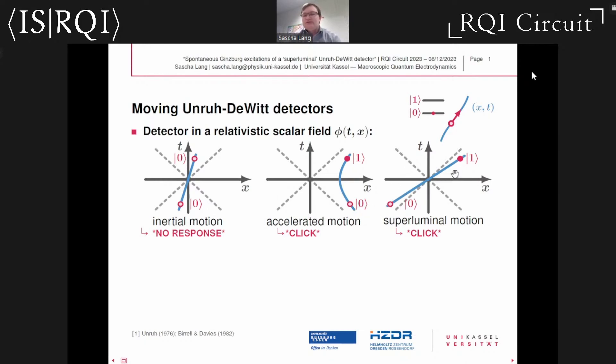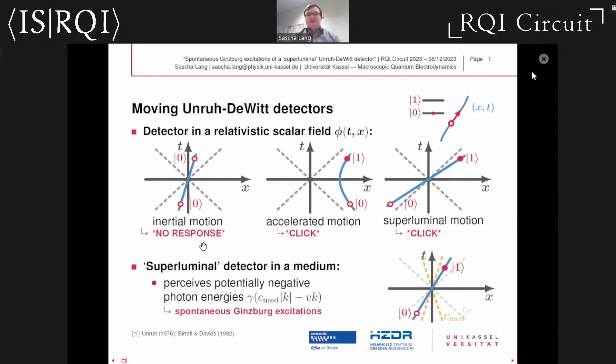Regarding inertial motion, there is one hypothetical exceptional case: in principle, if one was able to realize a superluminal particle detector, this would have a finite chance to get spontaneously excited. This leads to the question: what happens to superluminal detectors which move in dielectric media, in which there's a reduced effective speed of light as compared to the speed of light in vacuum? In such scenarios, it should at least be possible in principle to realize particle detectors which move at velocities greater than the medium speed of light but below the vacuum velocity.